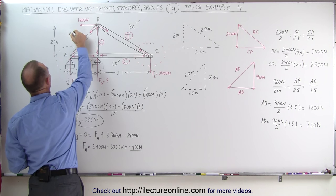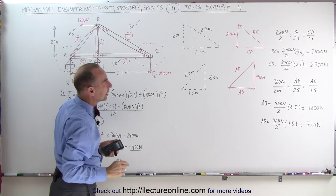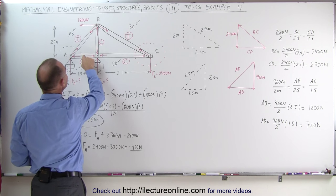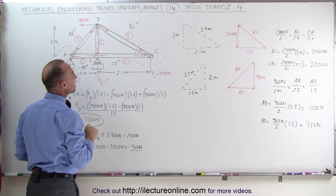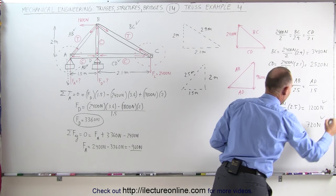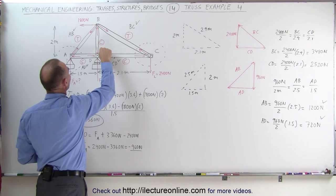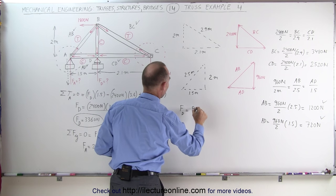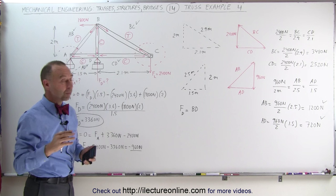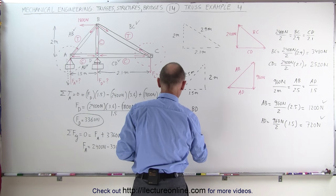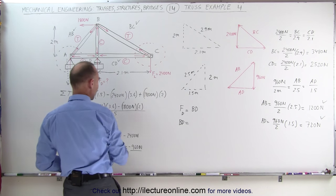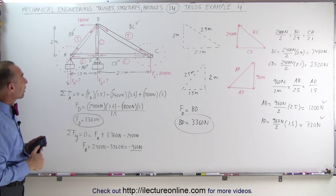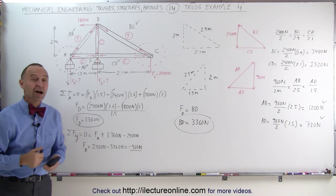AB is 1,200 newtons. Now, what about CD? Normally one might expect CD to equal AD, but that's not the case because it's being balanced out by the tension on AB. There's only one force left to calculate: from B to D. Since we know F sub D, and the sum of forces in the y direction must equal zero, the magnitude of those forces must be equal. That means BD equals F sub D, which equals 3,360 newtons. We now have all the forces on all the members, all the directions, the tension and compressions, and the support forces — and that's how we solve a truss like this.